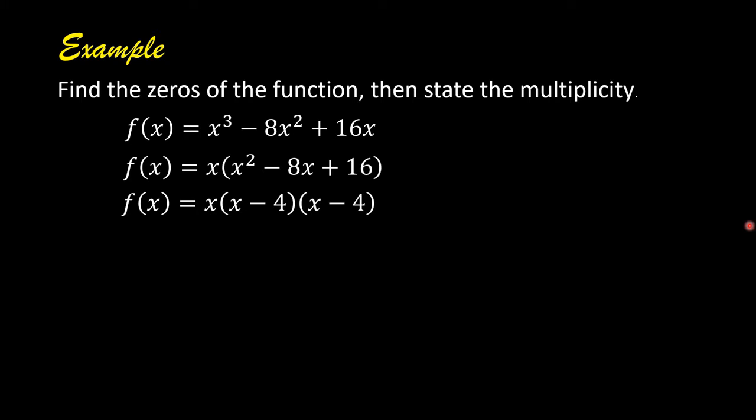So we have now f of x equals x times the quantity x minus 4 times the quantity x minus 4. You can check this one: x times x is x squared. Negative 4x plus negative 4x is negative 8x. Negative 4 times negative 4 is positive 16. The right side can be written as x times the quantity x minus 4, close parentheses, squared.